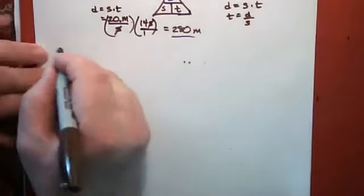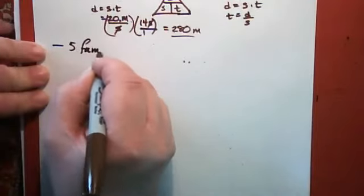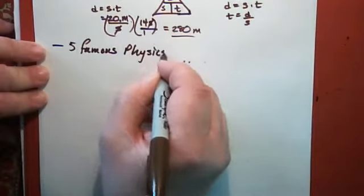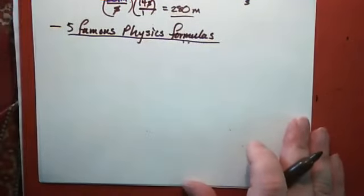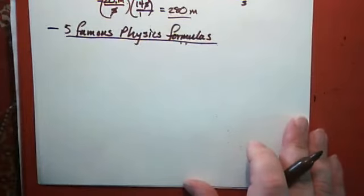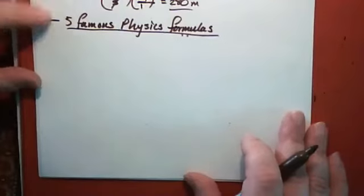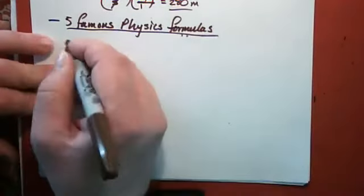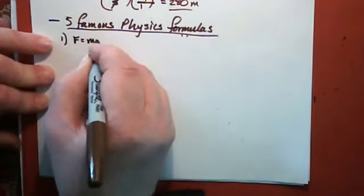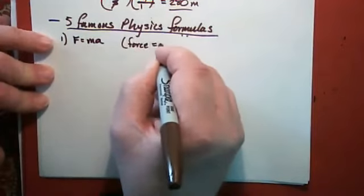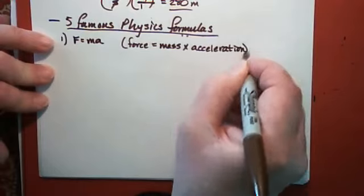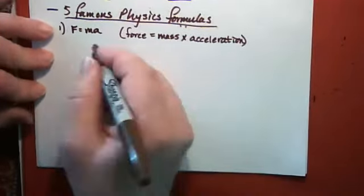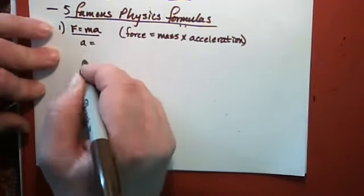Now we can go on to the five famous physics formulas. For each formula given, solve for the other two variables and set up a triangle. It also mentions that you don't have to use the triangle method — any method that gets you to the right answer is okay. Number one is F equals M times a, which comes from force equals mass times acceleration.